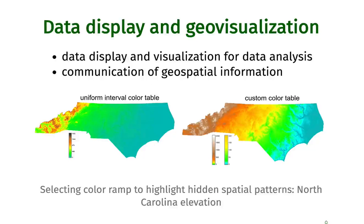We will cover data display and geovisualization, looking at it from the point of view of data analysis as well as its role in communicating geospatial information. Here is one example: we will learn how to work with color tables or color ramps to highlight or extract information. For North Carolina elevation data, a uniform interval color table doesn't reveal much topographic structure, but a custom or histogram-equalized color table can highlight terrain features even in very flat areas.